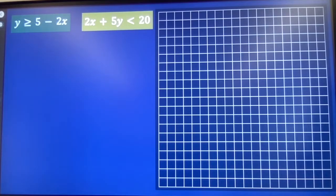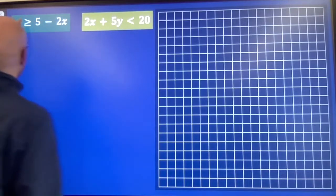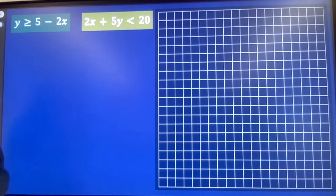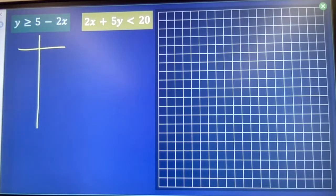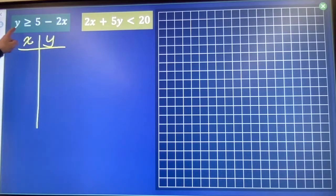Representing systems of linear inequalities graphically. First thing I'm going to do is forget about the inequality symbols, pretend they're equal signs, make a table of x,y values that satisfies each inequality. Pretending it's an equation though. So if my y is already isolated, I can just choose a couple values for x.